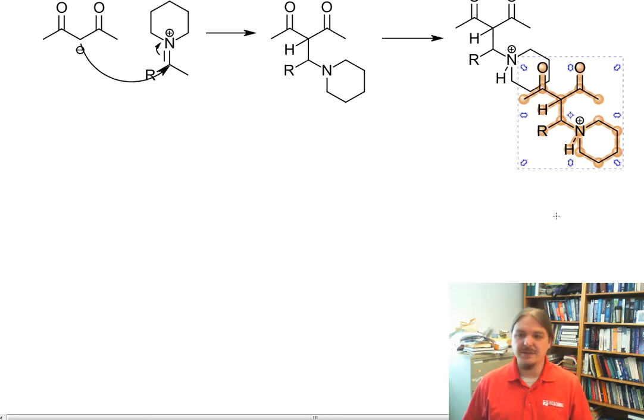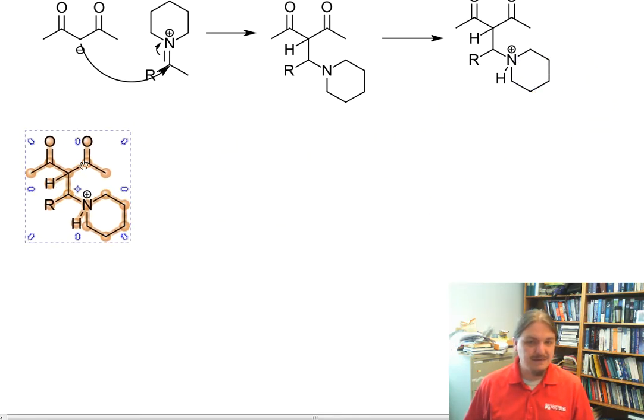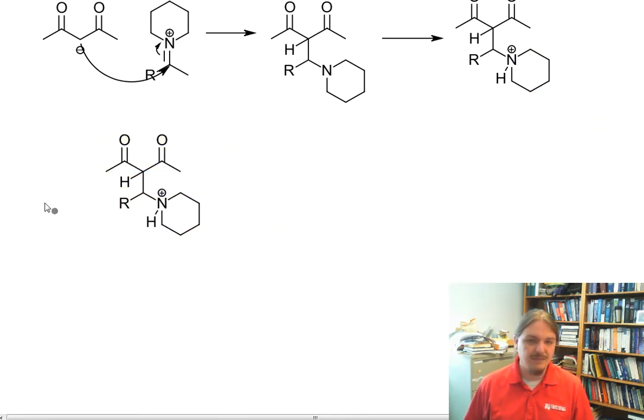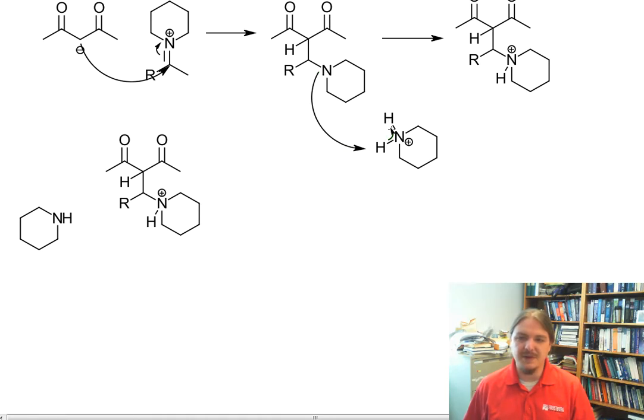Now we have something that is a decent leaving group, and we have a base. So, for example, I guess it's worth maybe drawing. This protonated piperidine, really, honestly, is our most likely base and most likely acid. Let's be explicit where this extra proton comes from.